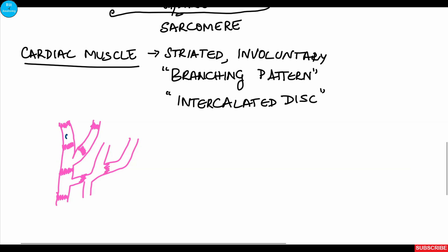Intercalated discs separate the cells. Each cell contains a single central nucleus, and there is presence of both transverse and longitudinal striations. The intercalated disc is present between adjacent cells and helps in faster transmission of impulses, making the cardiac muscle a physiological syncytium.